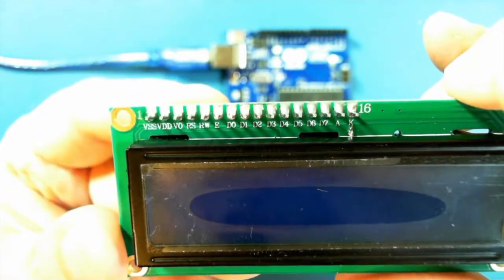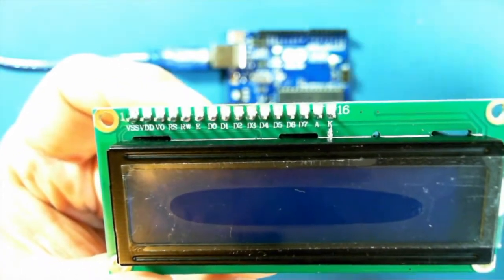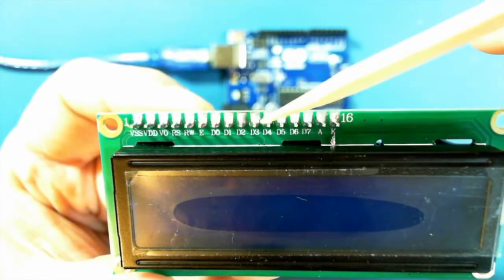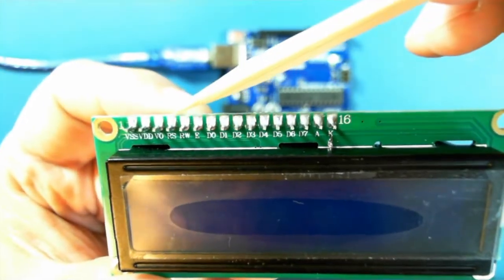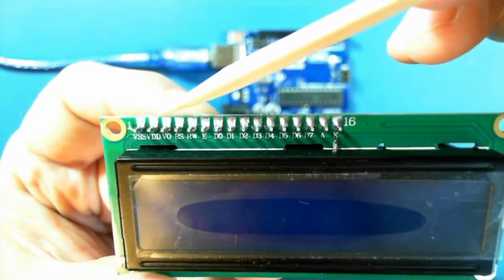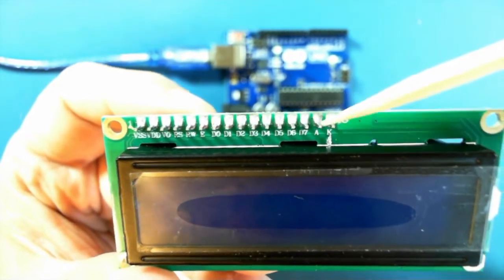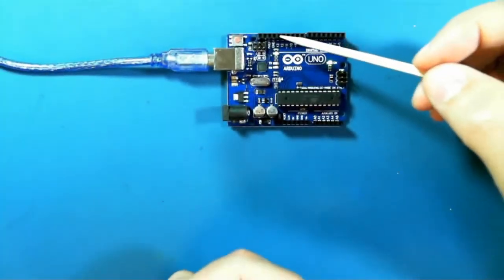There are all of these data lines into the LCD, data zero to seven plus some control lines and power lines, a lot of pins and we don't have that many pins really on the Arduino.